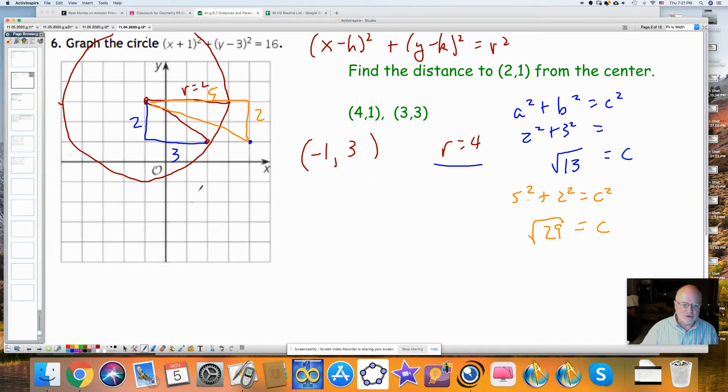And the last one that we have is (3, 3). And of course, this has a distance of 4. And my radius is 4. So this point is on this circle, this last one here.